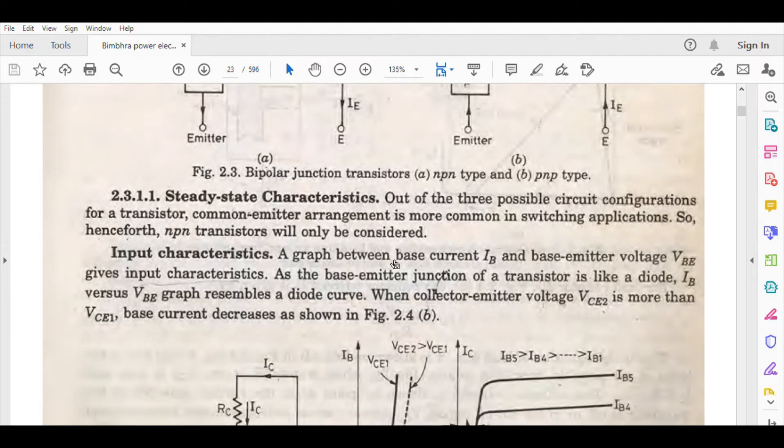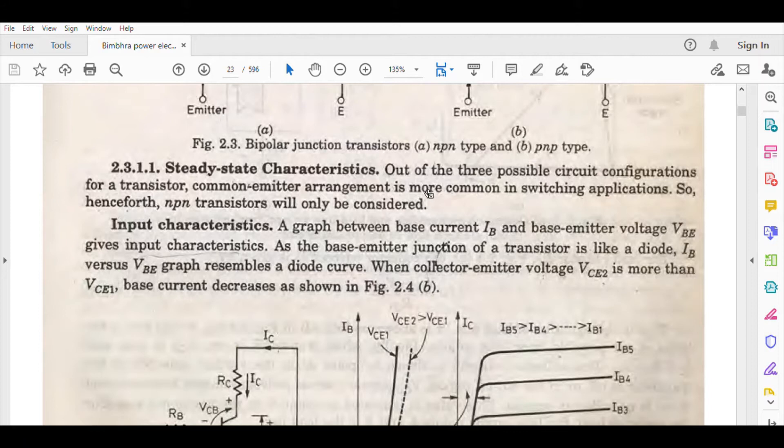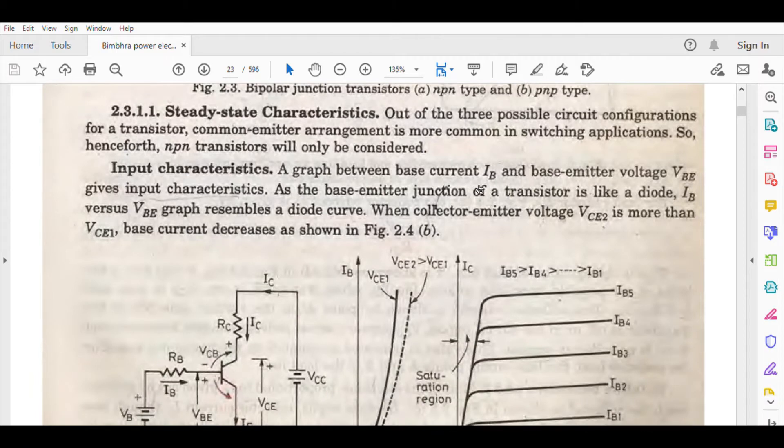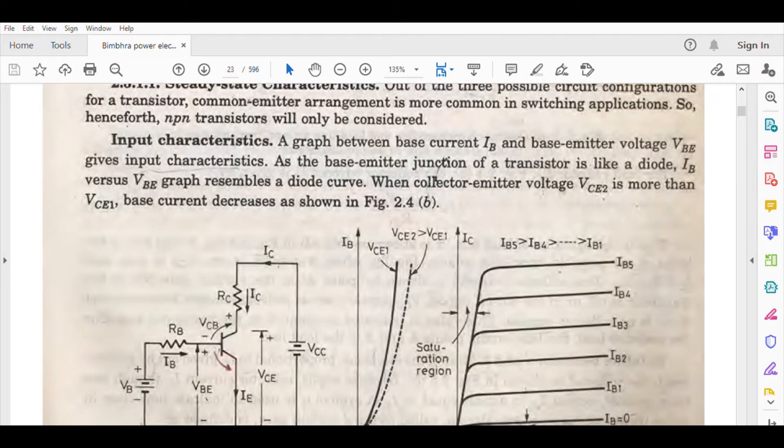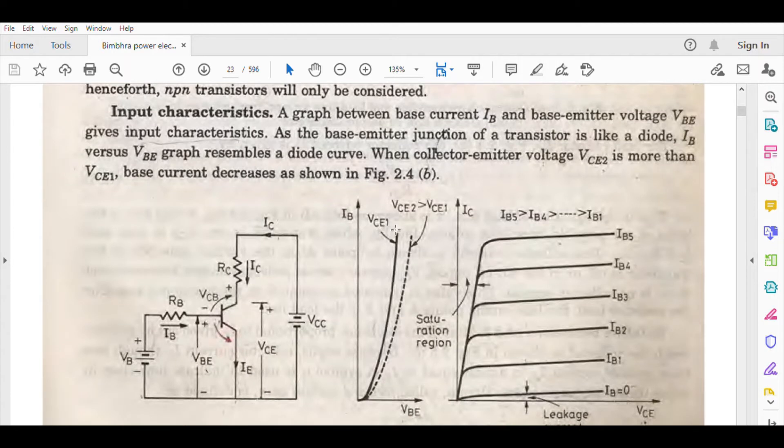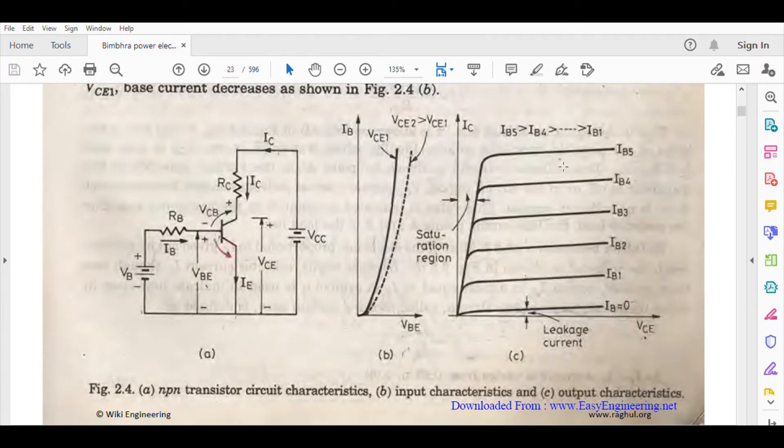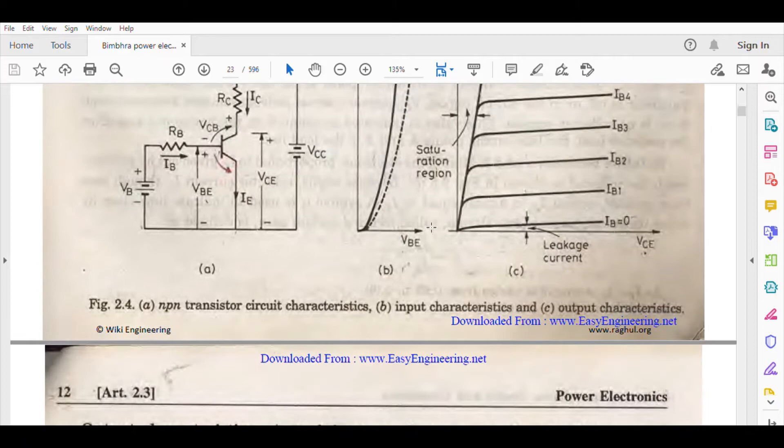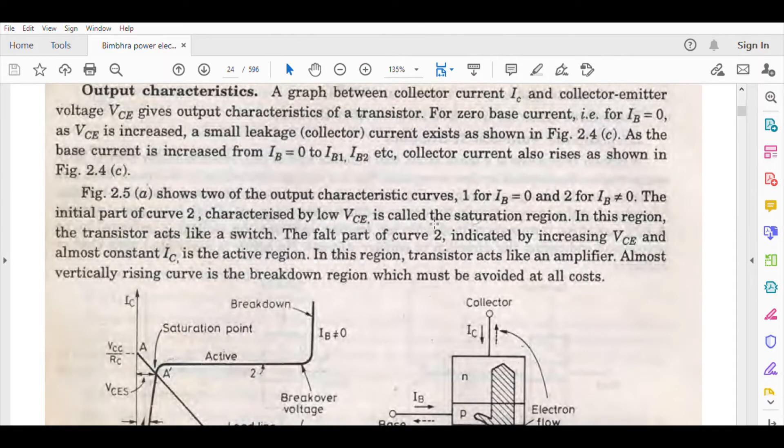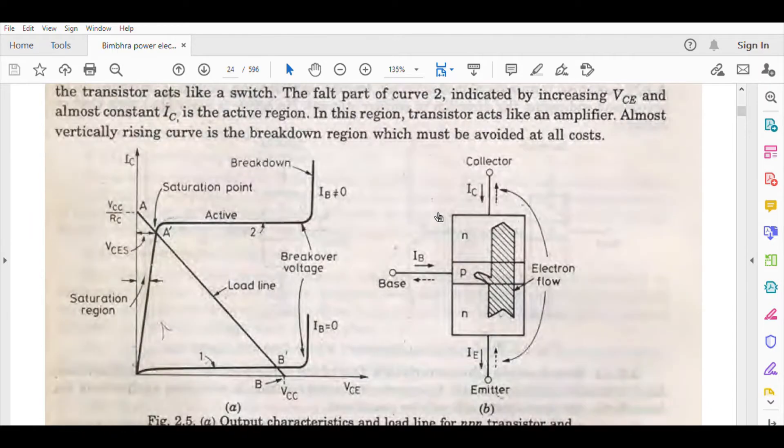The emitter is indicated by the arrowhead. Out of the three possible circuit configurations - common base, common collector, and common emitter - common emitter is most common. You have to know the input characteristics and output characteristics, which you already studied in third semester. Nothing new here. In the case of power transistor, this graph is plotted between VB and IB, where VB is input voltage and IB is input current. You also plot output current variation between VCE and IC.